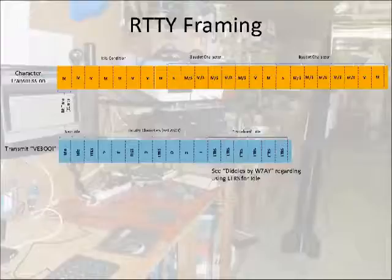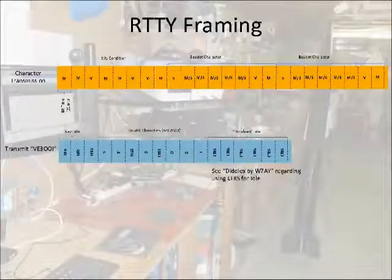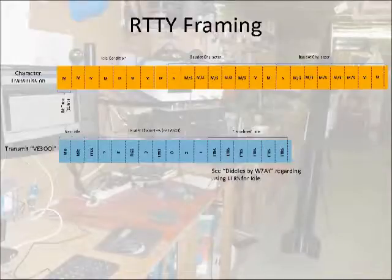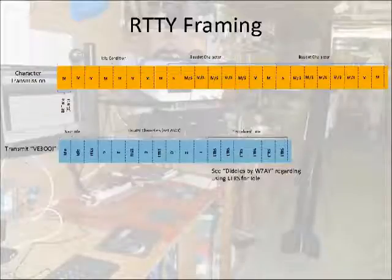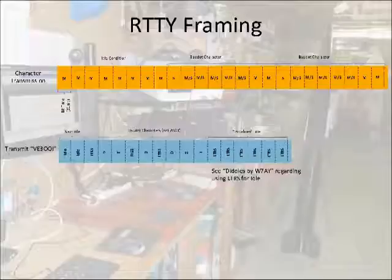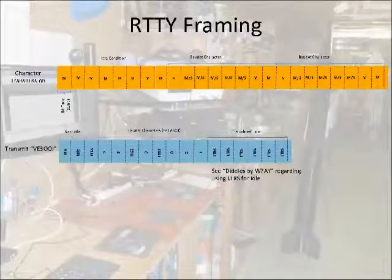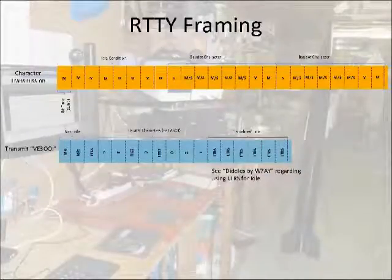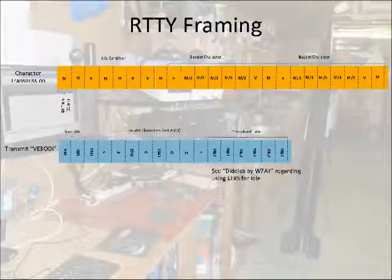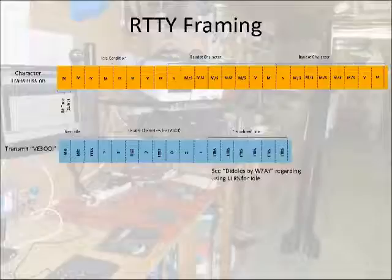The bottom diagram shows a sequence for transmitting VE3OOI. Each box represents a RIDI character that's sent — it doesn't represent a bit like the prior diagram. Once a channel has been initialized with the idle sequence, the transmitter sends the letters code followed by V and E. Before sending three, the transmitter must notify the receiver that it's shifting to figures and it sends a figures code followed by three. Since the receiver is now expecting figures, the transmitter must notify the receiver to switch back to letters and it sends the letters code followed by OOI. Once a transmission is complete, the transmitter sends idle sequences. I've noticed that FL Digi and DM780 send letters code as the idle sequence, and there's an article written by W7AY describing why this is done.